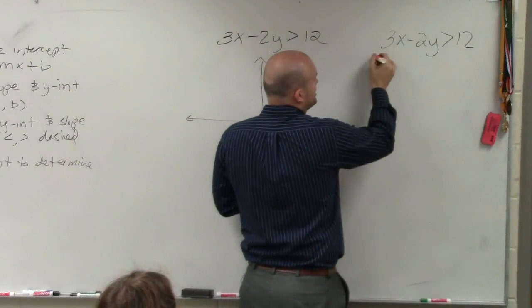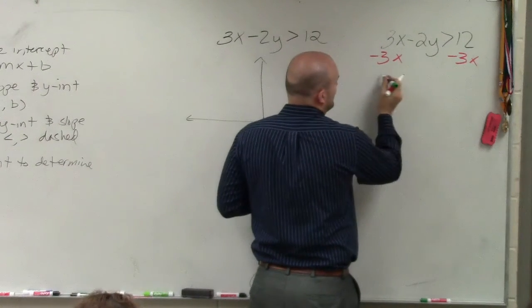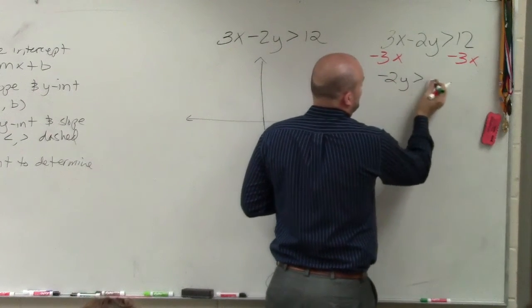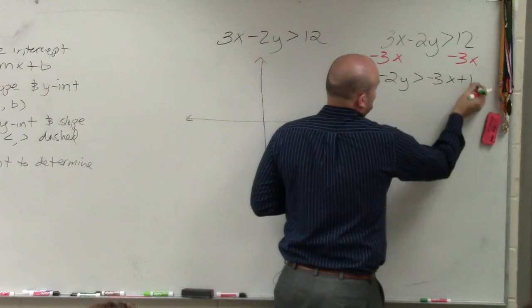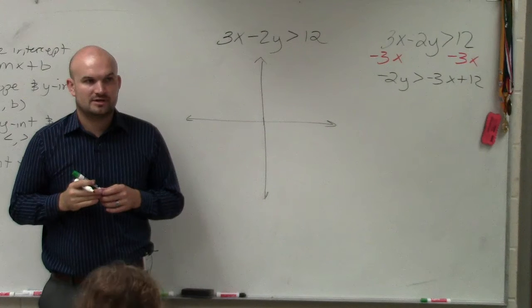So what I'm going to do is undo adding 3x by subtracting 3x. I have now negative 2y is greater than negative 3x plus 12. Does everybody follow me with what I did? Is everybody OK?